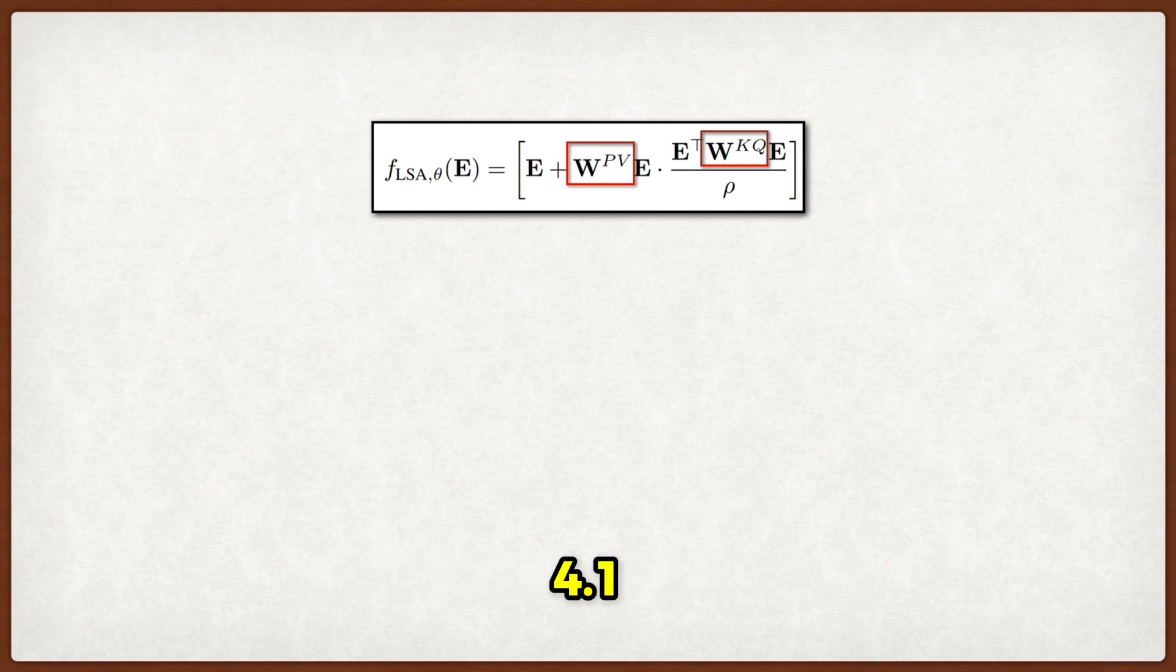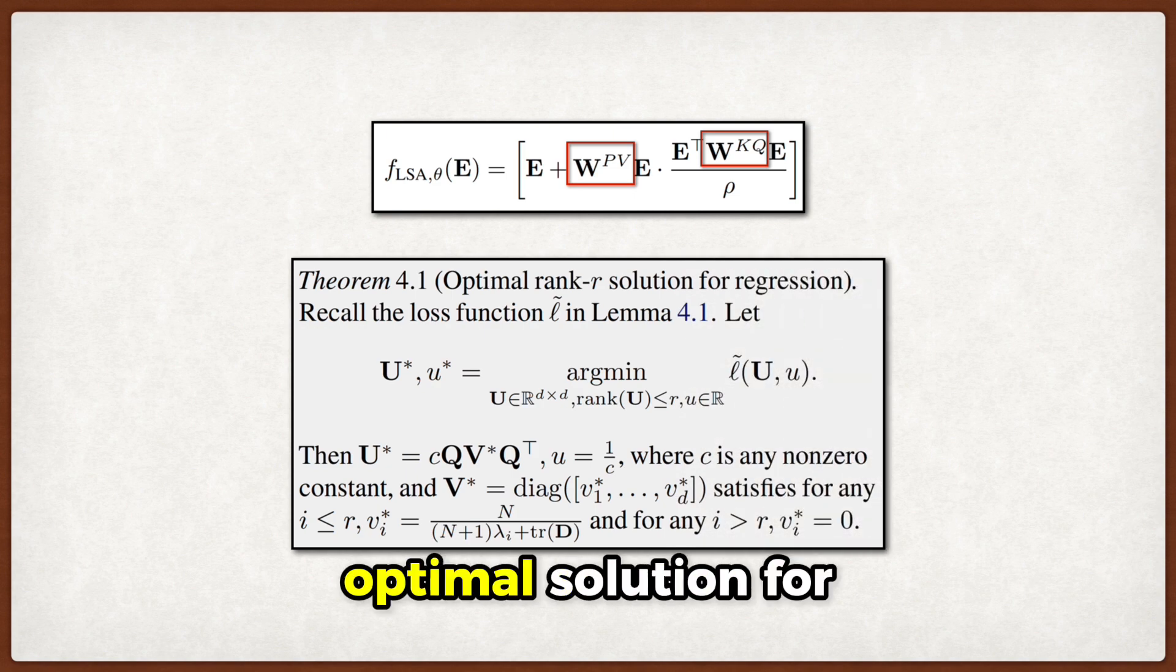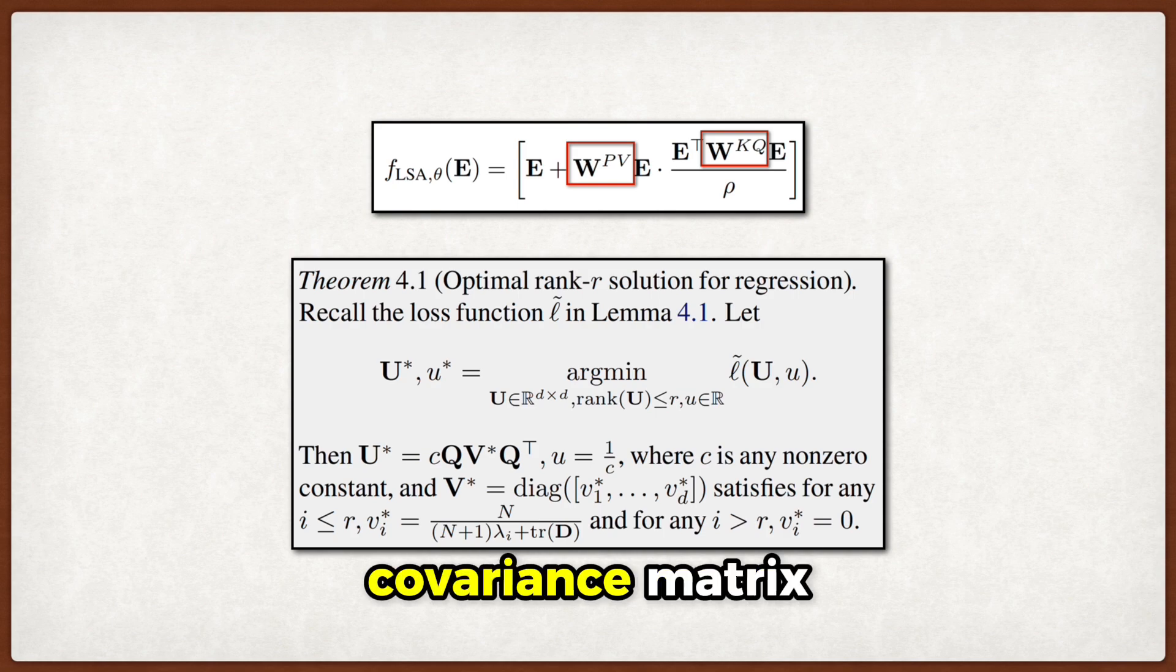What they find in theorem 4.1 is that the optimal solution for a rank R model only keeps the top R eigenvectors of the token covariance matrix.